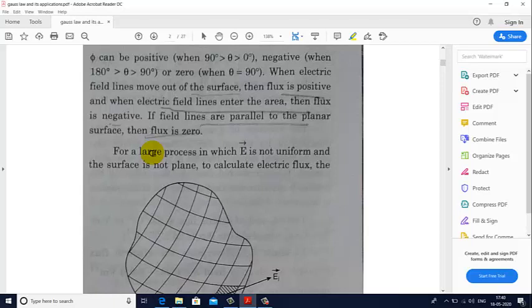So the formula for electric flux in that case will be E S cos 90. The value of cos 90 is zero, so the electric flux will be zero in that case. And when electric field lines move out of the surface, then flux is positive. If they enter the surface, then the flux is negative.